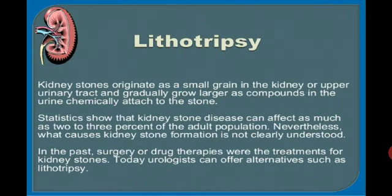Kidney stones originate as small grains in the kidney or upper urinary tract and gradually grow larger, as compounds in the urine chemically attach to the stones. Statistics show that kidney stone disease can affect as much as 2–3% of the adult population. Nevertheless, what causes kidney stone formation is not clearly understood.